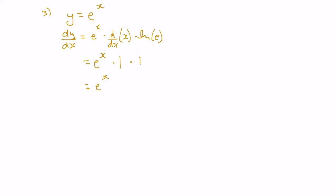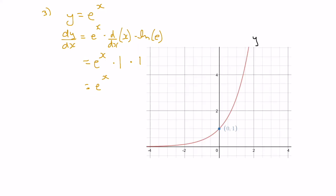Let's look at this graphically. This is the graph of the function y equals e to the x. Let's say we wanted to know the slope of the tangent line when x is equal to 0. To find the slope of the tangent line, we plug x into the derivative of the function. The derivative of e to the x is itself, so we substitute 0 in, and anything to the exponent 0 is 1. So the slope of that tangent line is 1.